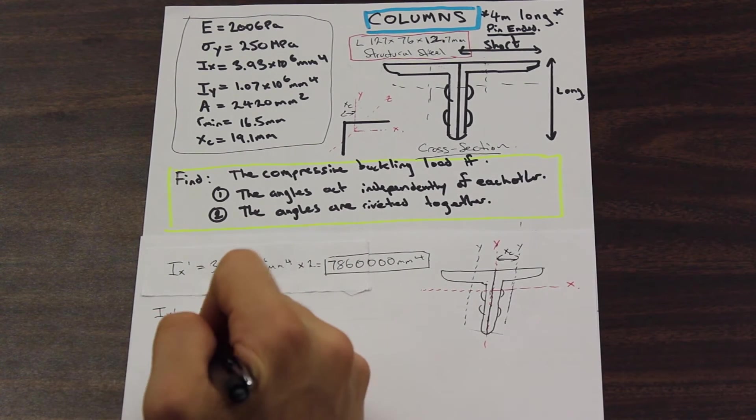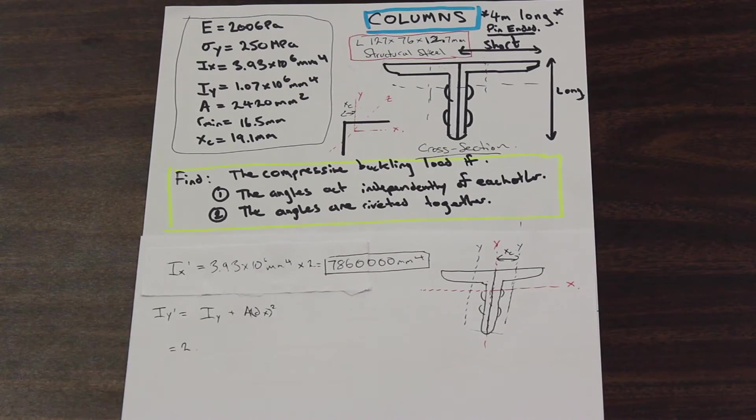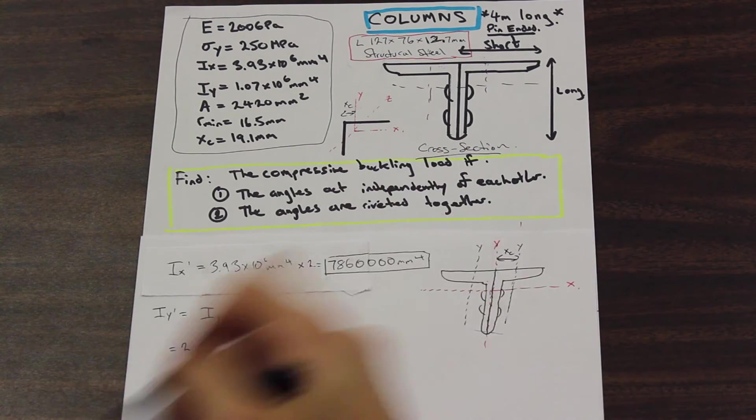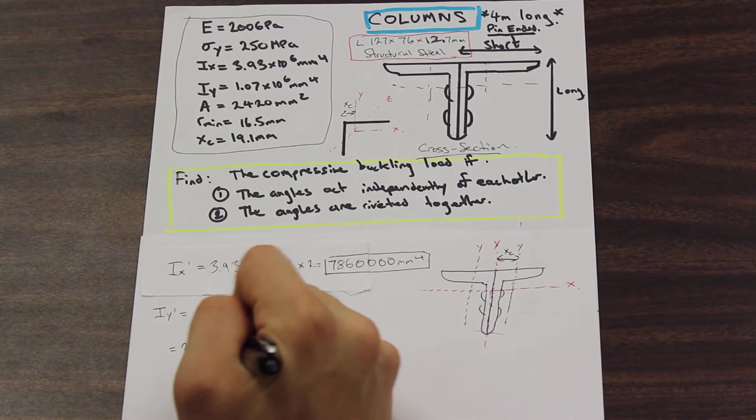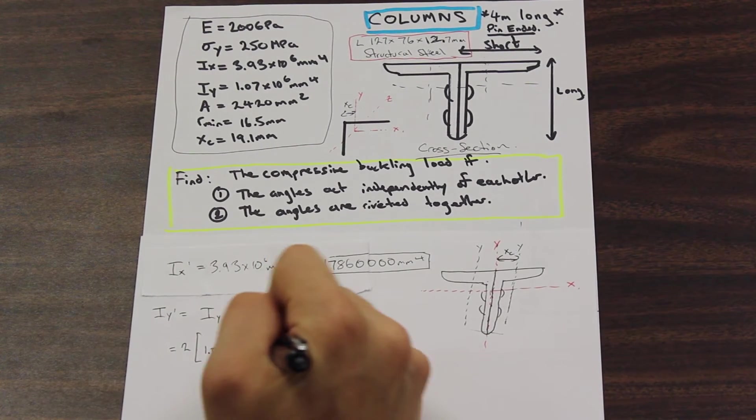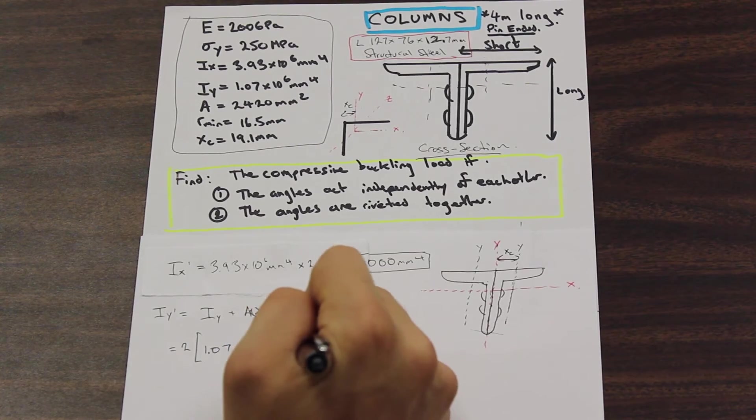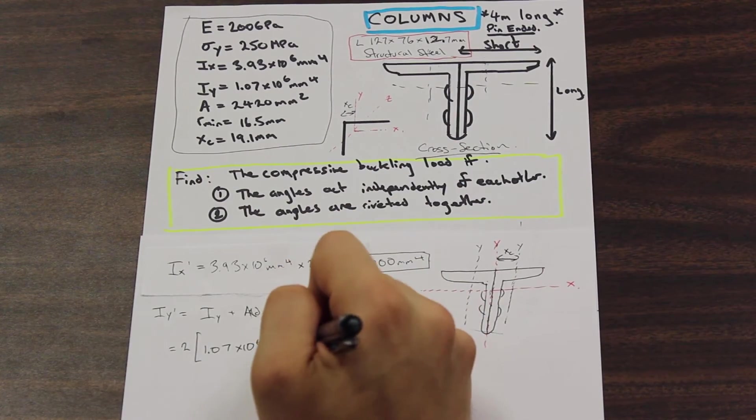This is obviously times 2, because we have two of them. We're not going to do them separately, make our lives easier. And what was our I_y? Well, it was 1.07 times 10 to the 6 millimeters to the 4th, and then we're just going to shift it over with our A dy term.